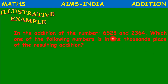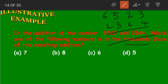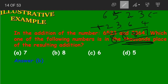Illustrative example: In the addition of 6523 and 2364, which number is in the thousands place of the resulting sum? Starting from ones: 3 plus 4 is 7; tens: 2 plus 6 is 8; hundreds: 5 plus 3 is 8; thousands: 6 plus 2 is 8. We have 8 in the thousands place, so the correct answer is option B, which is 8.